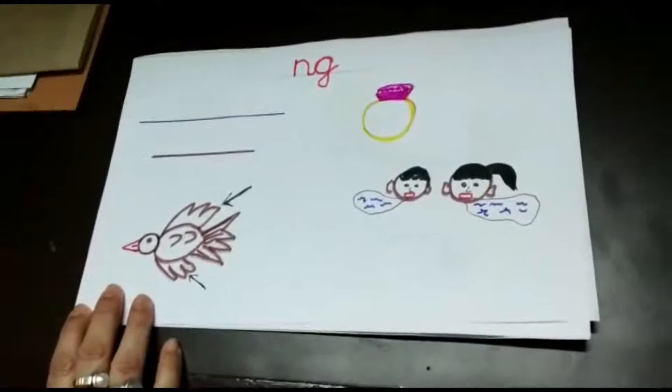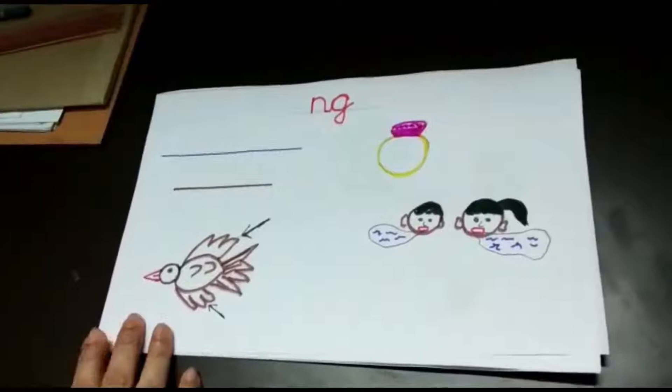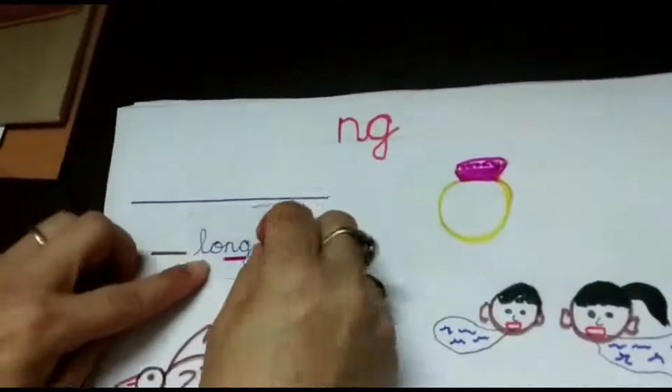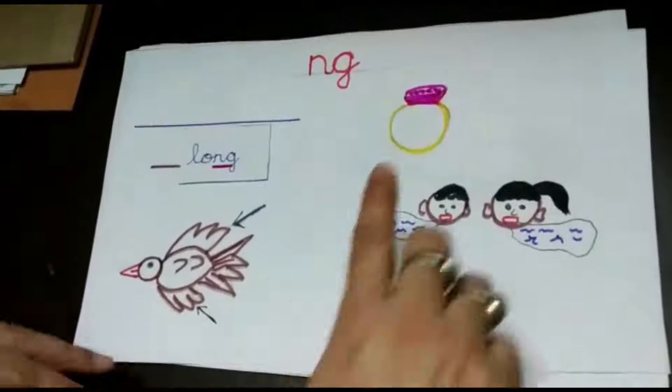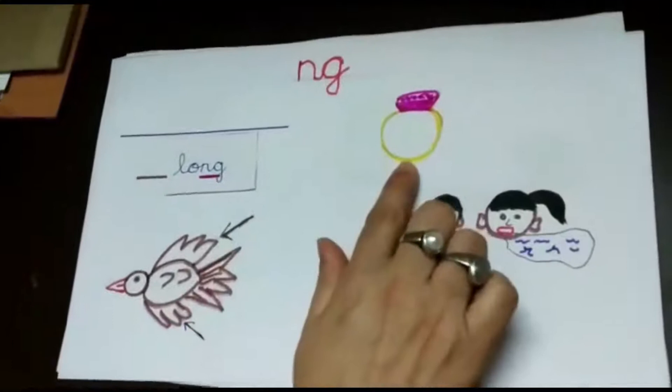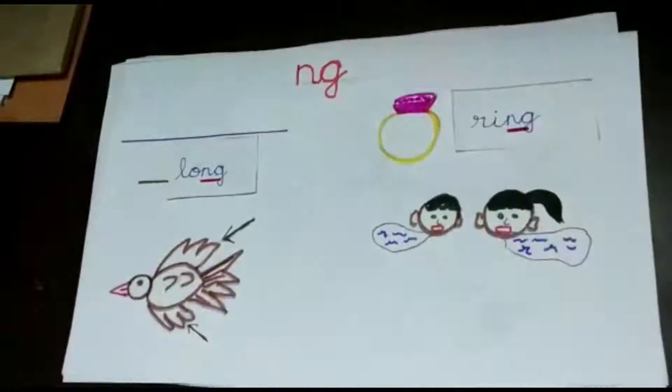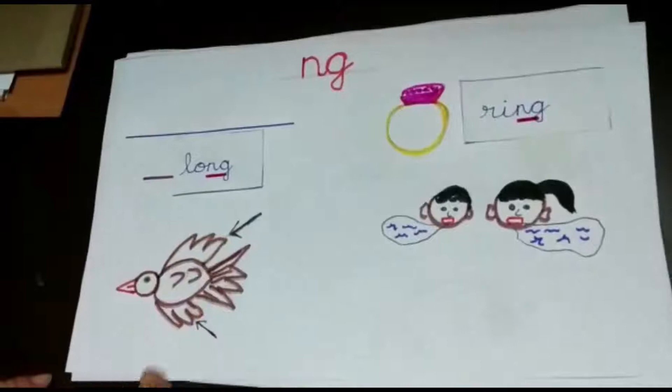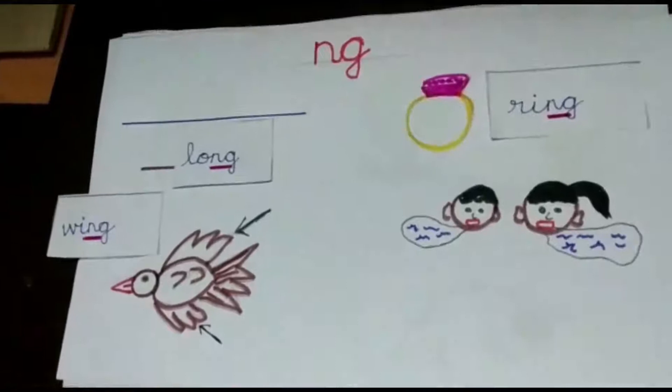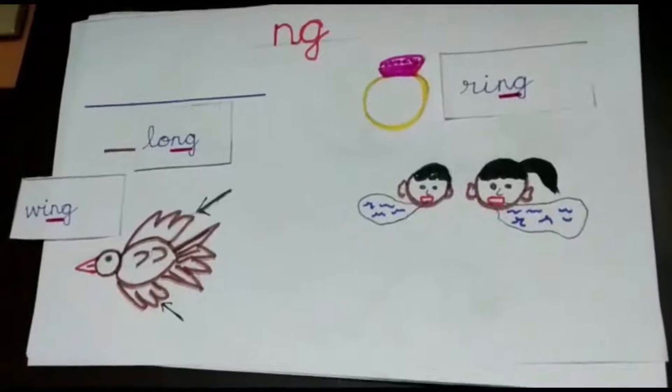My student, can you tell me what this line is? This is a long line. Now the next picture, here you see, you wear it on your finger. Yes, ring, ring, ring. Then the bird flies with the help of the wing. The black arrow which is pointing is the wing of the bird.